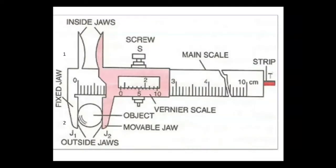First, we will see the different parts of the Vernier Caliper: Main Scale, Vernier Scale, Movable Jaw, Upper Jaw, Lower Jaw. These are some of the main parts of the Vernier Caliper.